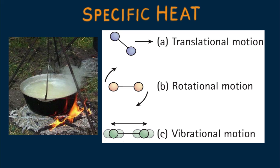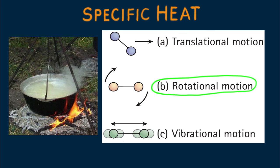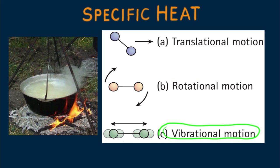This kinetic energy comes in three main forms: the energy of to-and-fro translational motion of particles, the rotational kinetic energy of particles, and the vibratory motion of particles.